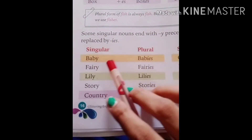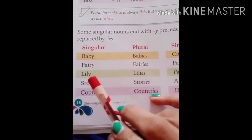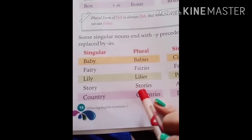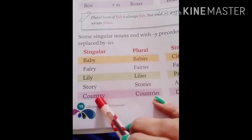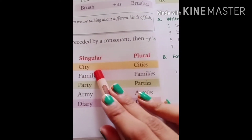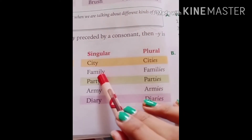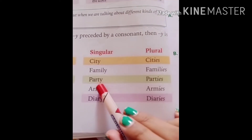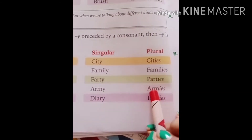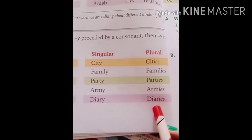For example: baby → babies, fairy → fairies, lily → lilies, story → stories, country → countries, city → cities, family → families, party → parties, army → armies, diary → diaries.